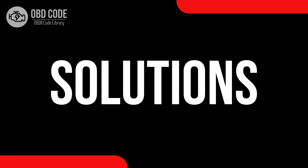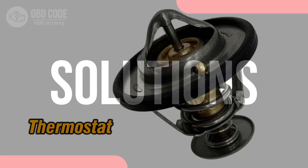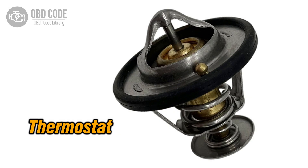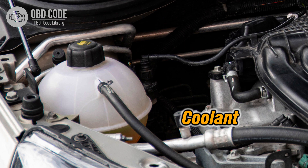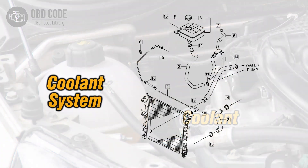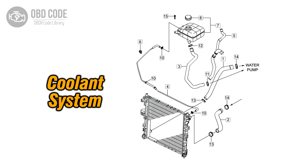Code solutions P0217: 1. Check and replace the thermostat if it is malfunctioning. 2. Inspect the coolant levels and address any leaks in the system. 3. Evaluate the condition of the cooling system components and replace any faulty parts.